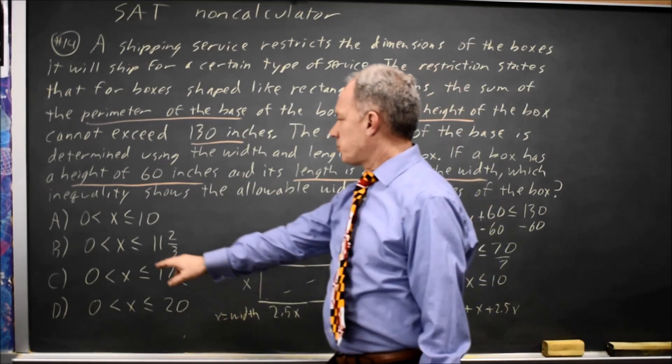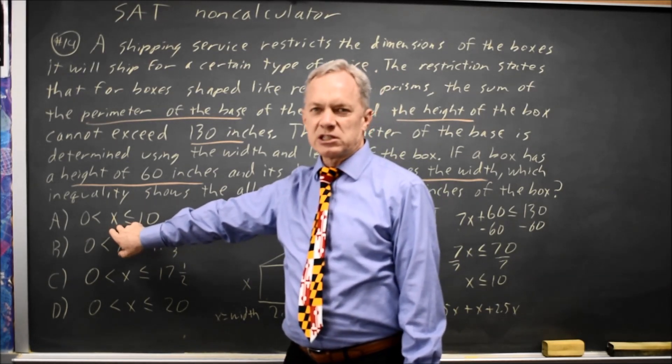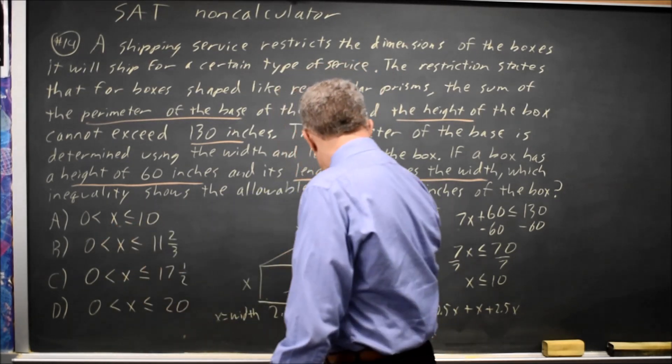And we get a restriction that x has to be positive because otherwise we don't have a box to ship. So this would be choice A.